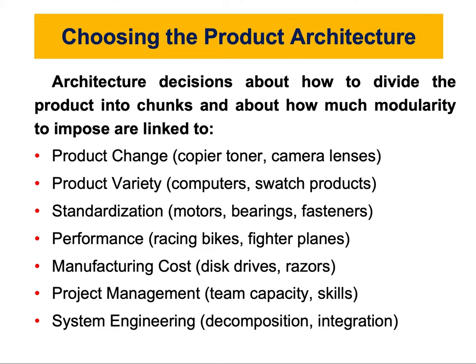For racing bikes and fighter planes, you need to think in terms of integral architecture rather than modular, because you are confined to space and weight constraints and need chunks to perform as many functions as possible. Manufacturing cost is also an important factor that drives us toward integral architecture — to reduce cost, we want as few parts as possible, which is referred to as component integration. If you want to build something for high performance and also reduce manufacturing cost, you need to go integral rather than modular.